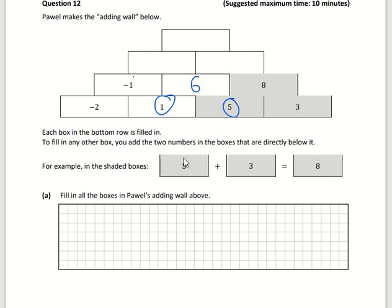And then in order to get the next one, I'm going to do minus 1 plus 6. So minus 1 plus 6 is 5. You can double check that on the calculator if you're not sure. And I'm going to do 6 plus 8. That gives me 14 to give me that box.